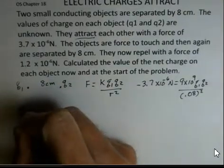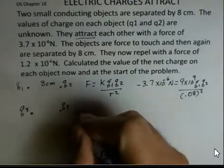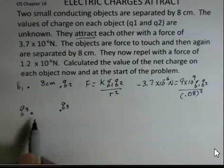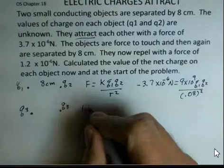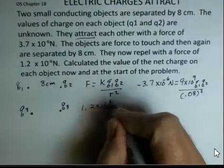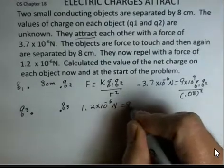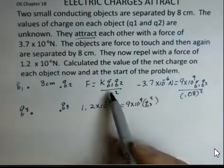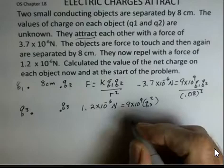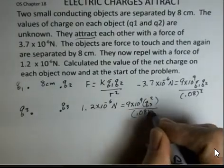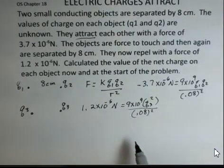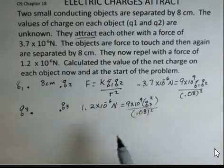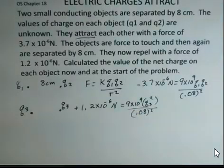Now they're repelling with a force of 1.2 times 10 to the minus 6 Newtons. When they touch, they're going to share charge equally if they're the same size. So we'll put Q3 on the two objects, still 8 centimeters apart. Now our force is 1.2 times 10 to the minus 6 Newtons. Still 9 times 10 to the ninth for a constant. Q3 times Q3, I'm just going to simplify that. We have Q3 squared divided by 0.08 squared. Is there anything wrong with this equation?